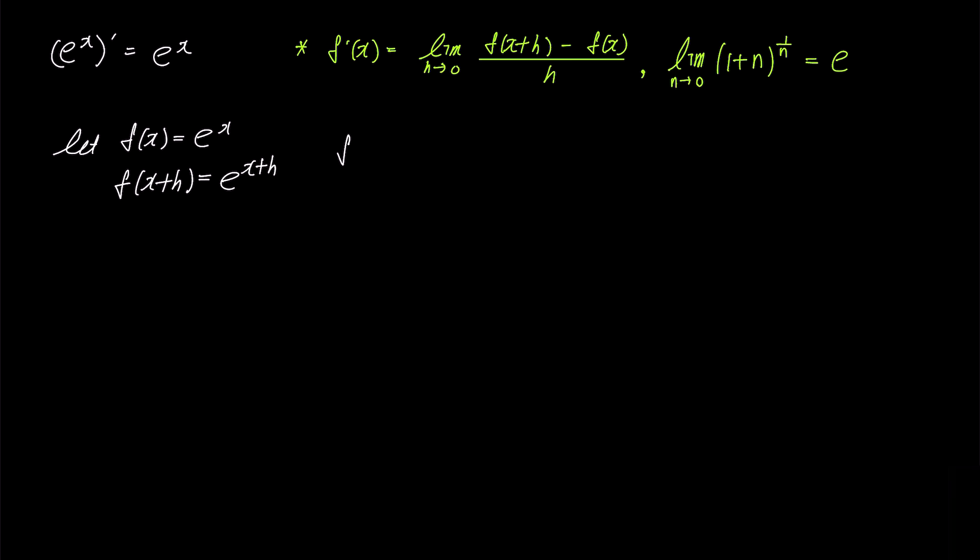If we substitute these expressions into Green's formula, the numerator can be expressed as e to the power of x plus h minus e to the power of x, and the denominator remains as h. By observing the numerator, we can see that e to the power of x is a common factor.